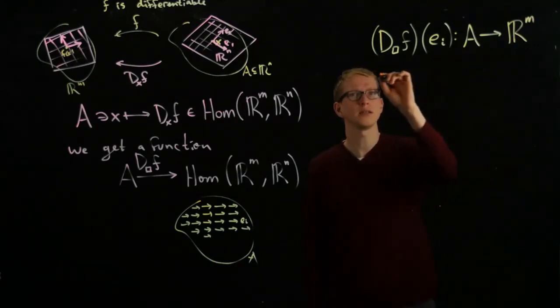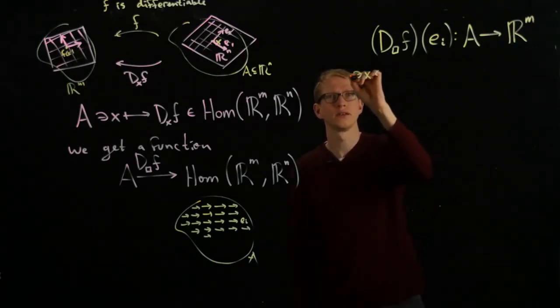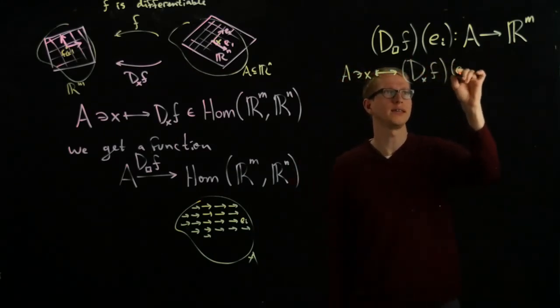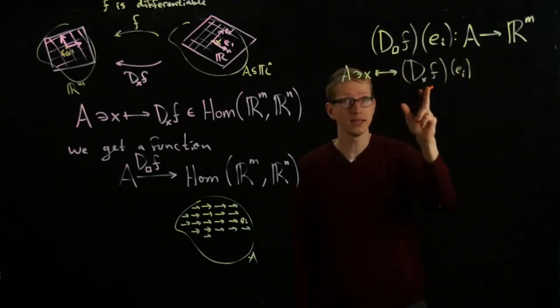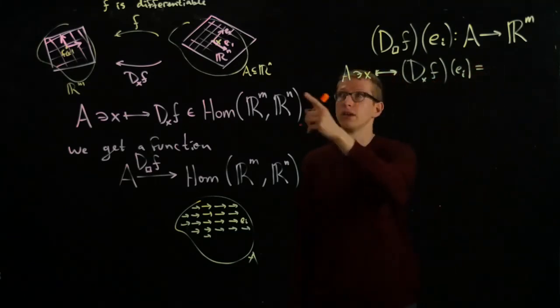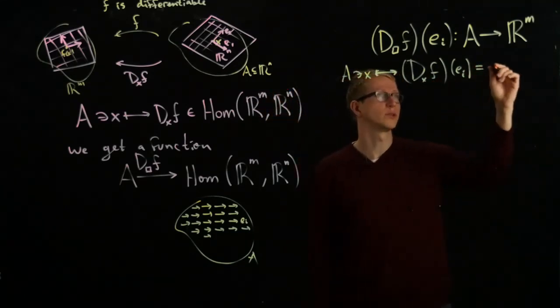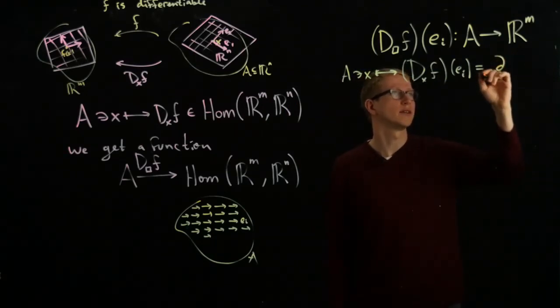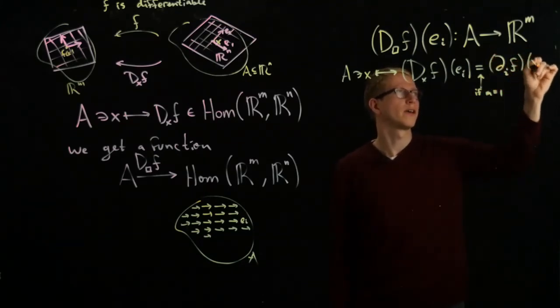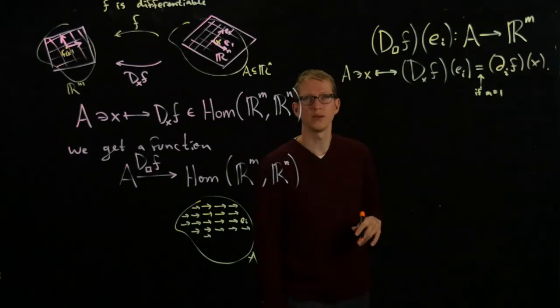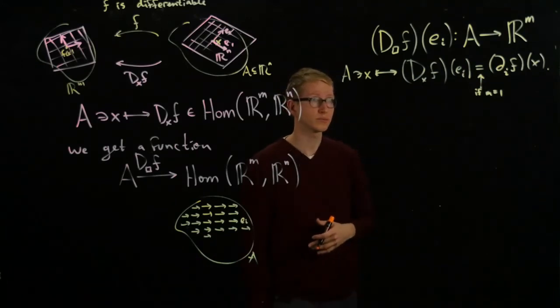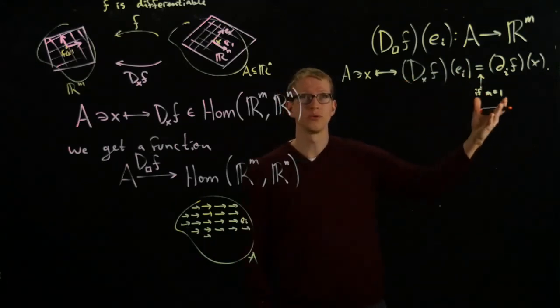What function is it, just so we're clear with the notation? If I take an element x in A, then that gets sent to Dx f(ei). In other words, this is the partial derivative of f in the i-th direction. Well, f could be an m-component vector, so if m was 1, that's what it would be. So, let me write that if m equals 1. Then this is Di f evaluated at x. And we know that the partial derivative is a function from our domain to the codomain, so this is consistent with something we're already familiar with.